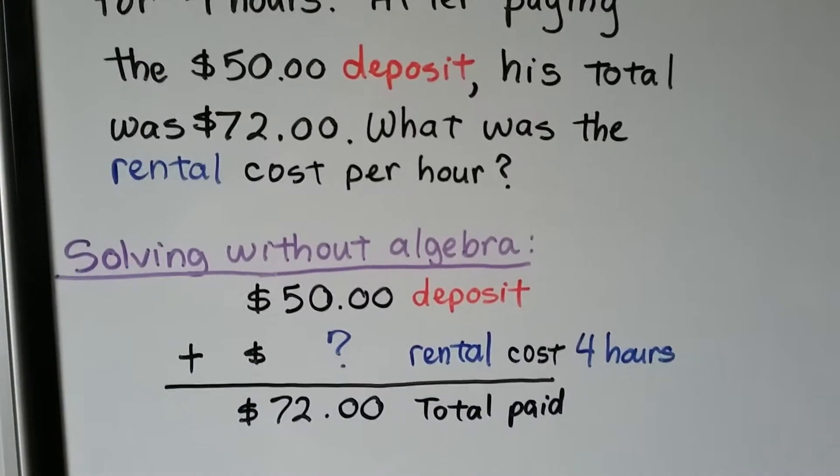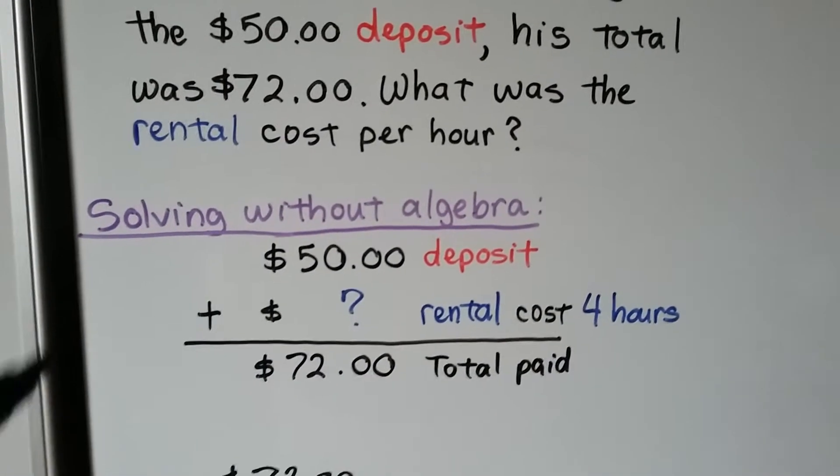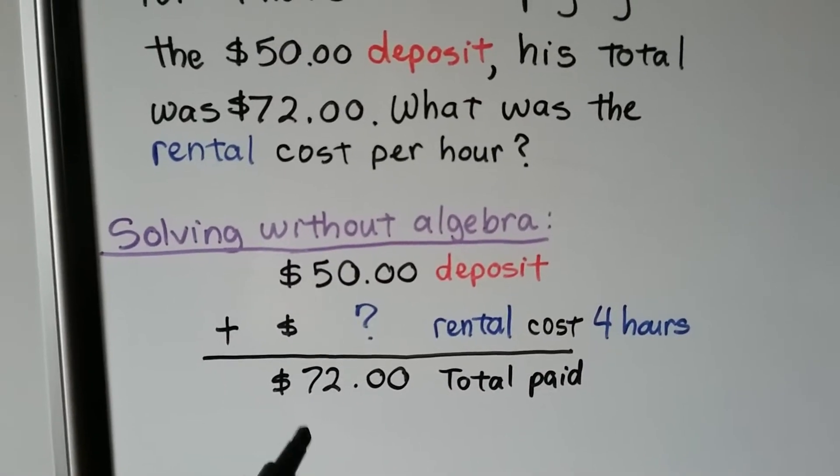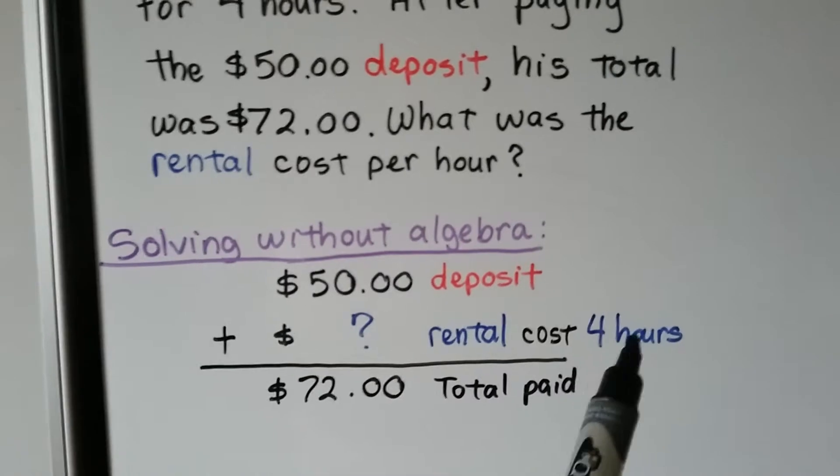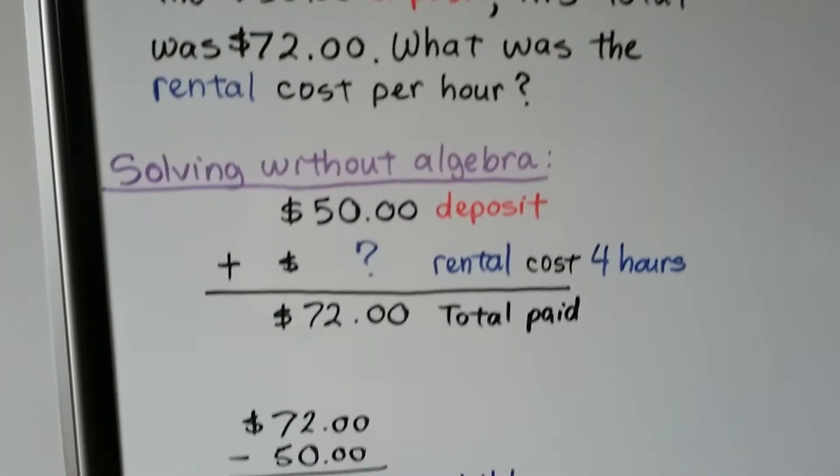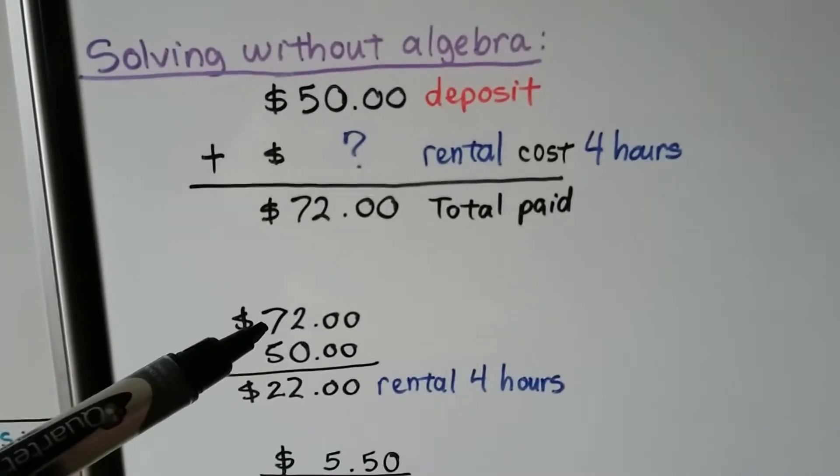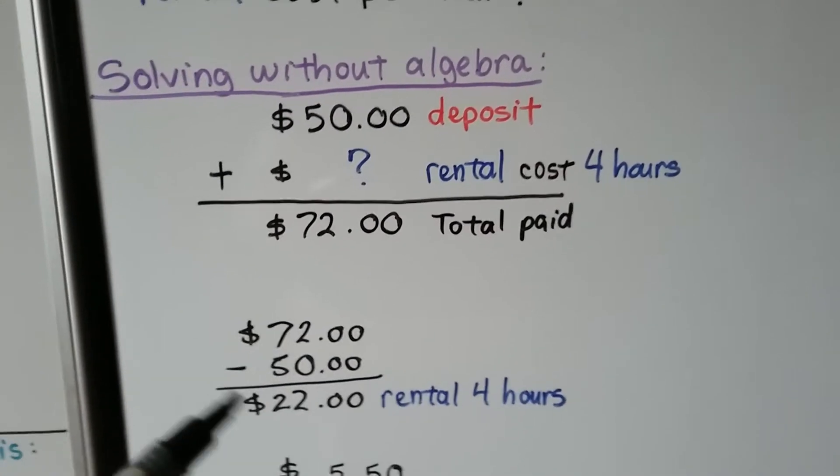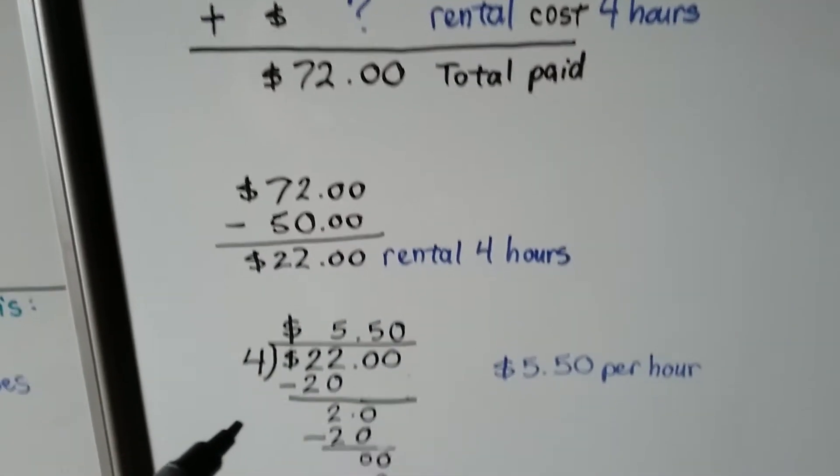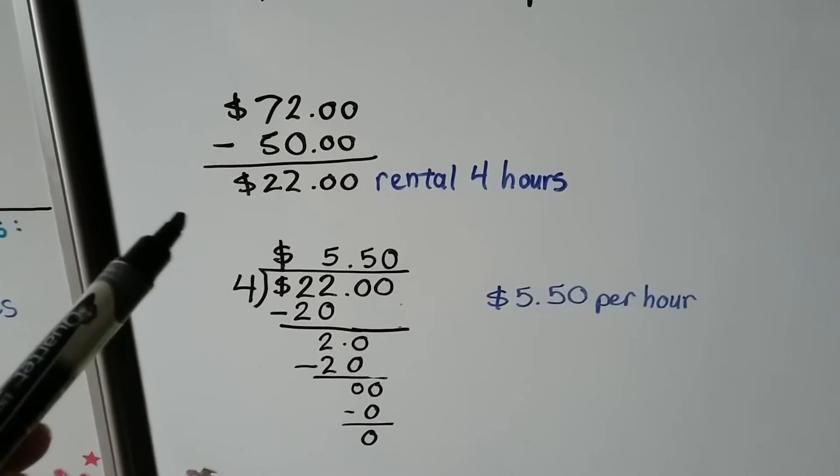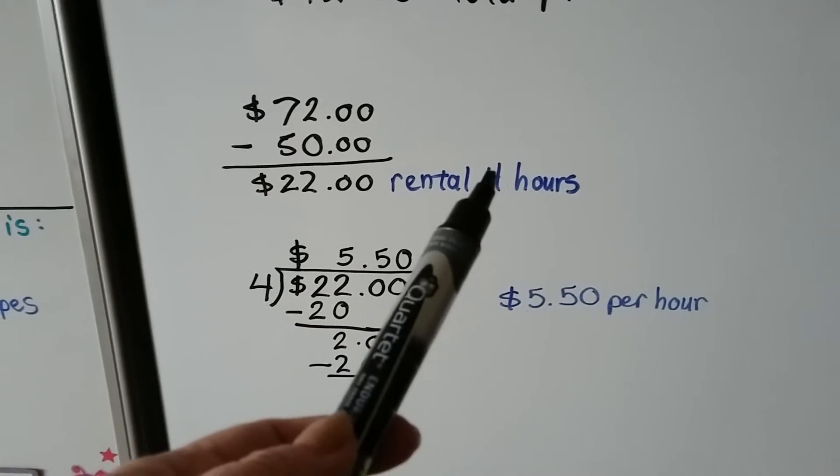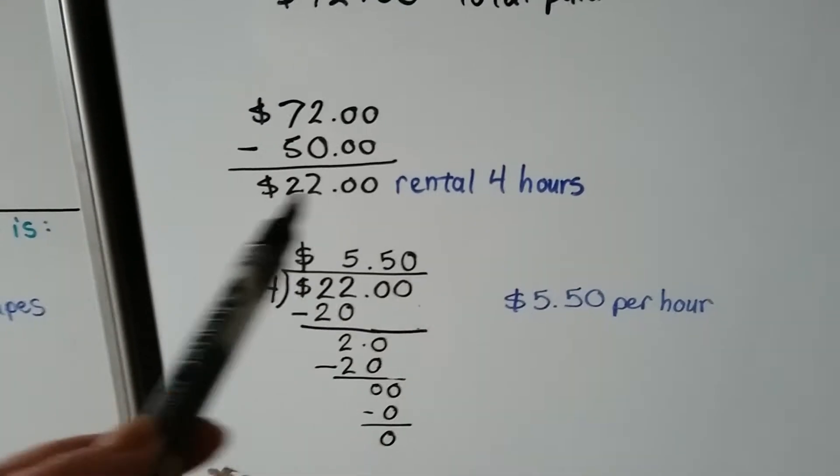So here's solving it without algebra. He had a $50 deposit, we know his total was $72, we just don't know what the rental cost for the four hours was. But we could find that with simple math. We can just subtract the deposit from his total and see that he paid $22 for the four hours. All we have to do to find the cost per hour is to split this $22 into four. Then we'll know each hour.